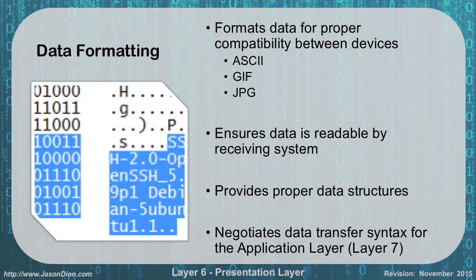If I want to send a picture, it's going to come over as zeros and ones as well. How does it know that that series of zeros and ones is to be represented as a picture? Well, it's going to be either a GIF file or a JPEG file — that's just the way it's formatted. Here on the left, you can see in the picture all those zeros and ones, and they represent the actual text of SSH 2.0, open SSH, and so on. That's how it translates out based on ASCII — I can actually see those letters based on the binary they are.